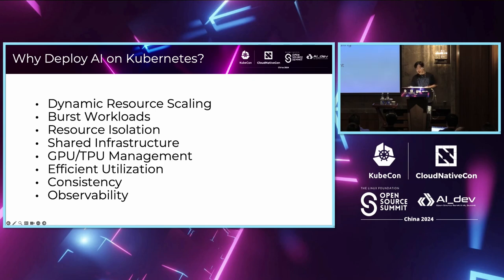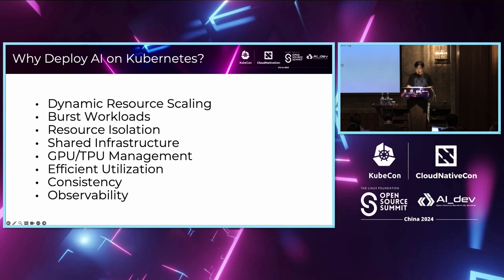Thinking about deploying AI workloads on Kubernetes — it gives us dynamic resource scaling. When we have burst workload, for example starting AI training, the auto scaling feature is very much in demand. We can have multiple Kubernetes clusters for AI workloads. Kubernetes supports scheduling and managing specialized hardware like GPUs and TPUs, optimizing their utilization for AI workloads. Most of these factors are the same common factors as the general Kubernetes benefits — that's why we deploy AI on Kubernetes.